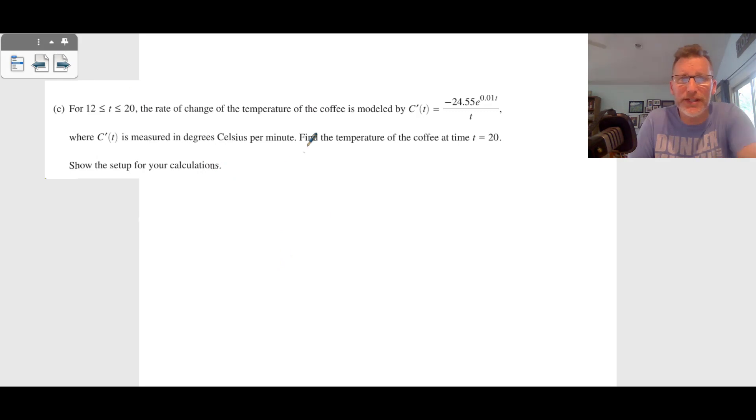Then we go to part C. Part C gives us a new function, which is C prime of T. This is a rate. It's measured in degrees Celsius per minute. We want to find the temperature at time equals 20. Remember, this was from 12 to 20. And so we want to take an integral. We want to take an integral from 12 to 20 of this C prime of T, DT.